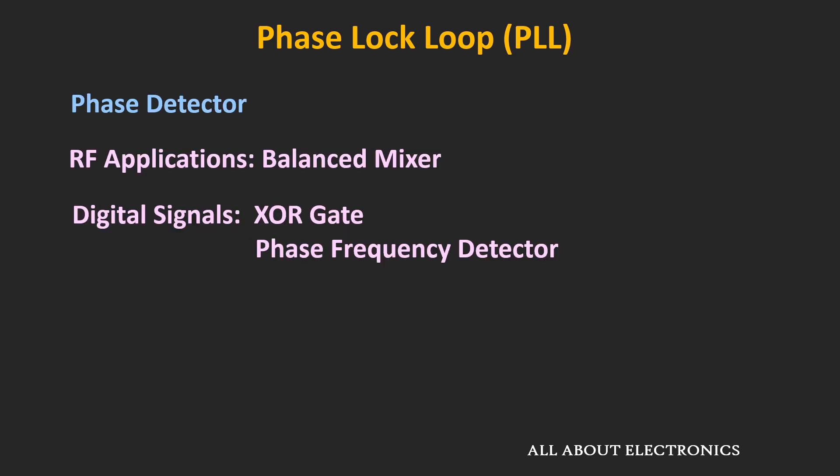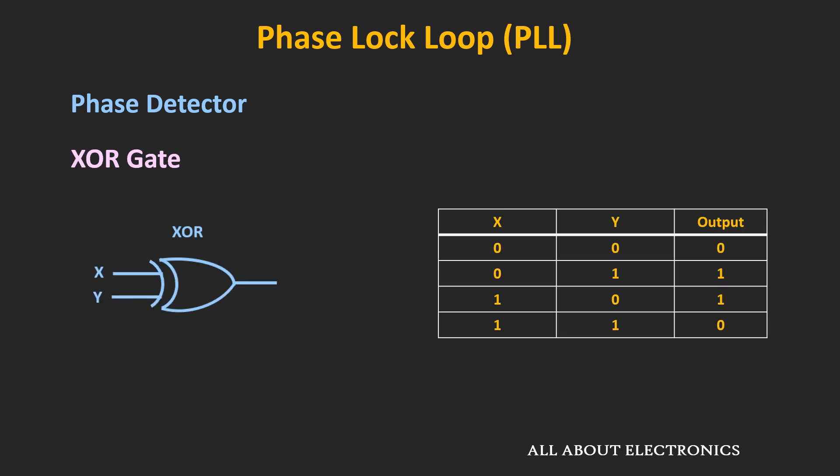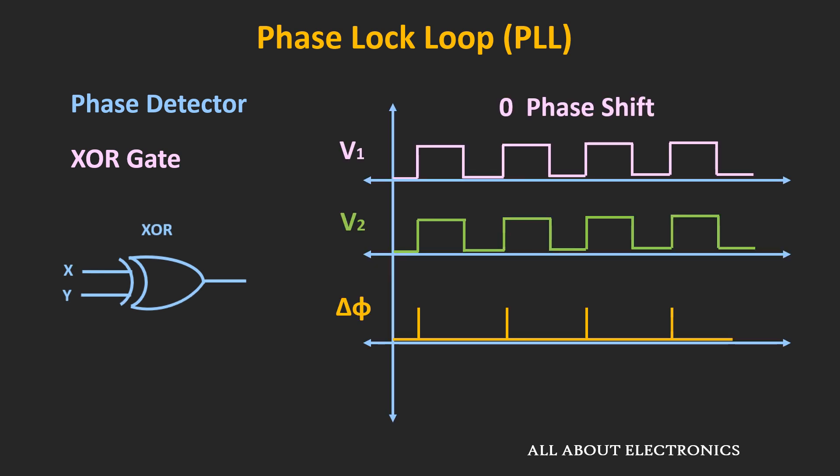At radio frequencies, the balanced mixer is used as a phase detector. For digital signals, the phase frequency detector or even an XOR gate can be used for phase detection. Let's understand how the XOR gate can be used as a phase detector. This is the truth table of the XOR gate — the output will be high when the two inputs are different. Whenever there is no phase difference between the two signals, the output of the XOR gate should ideally be zero, though there will be some spikes at the transitions.